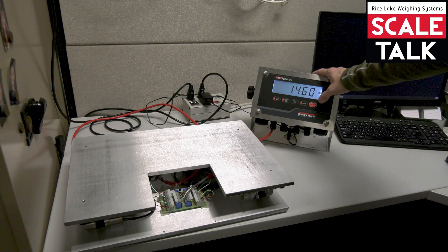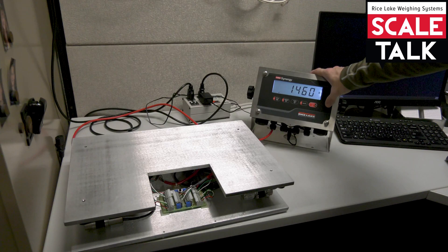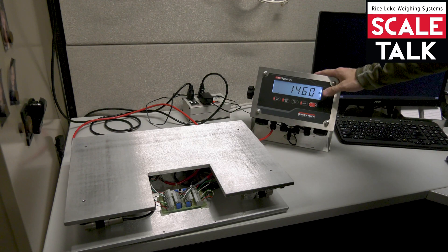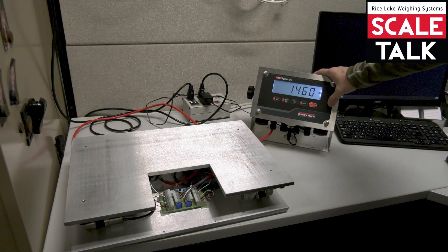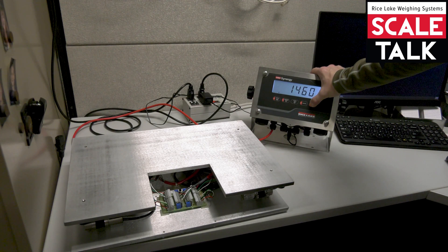What we'll have to do is get into the configuration menu of the indicator in order to perform this, and so to make that happen we have to begin with the scale powered down. So we're going to press and hold the power button until the display reads off.